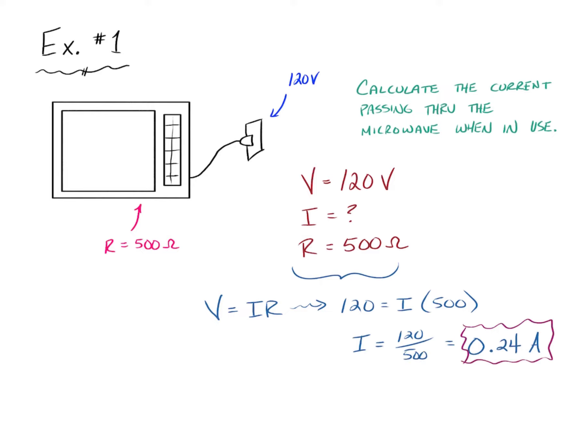So the current, therefore, must be 120 divided by 500. And that tells us that this has 0.24 amps of current passing through when it is in use.